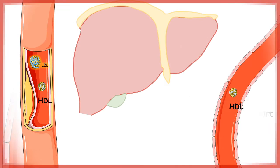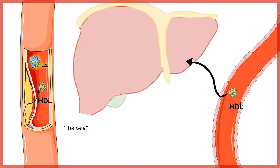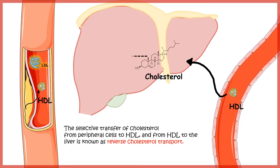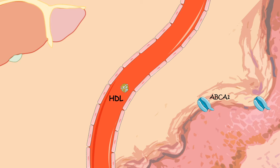LDL deposits excess cholesterol in the artery walls, while HDL circulates, collects that excess cholesterol, and returns it to the liver. This selective process is known as reverse cholesterol transport, where peripheral cholesterol is returned to the liver for recycling. The cholesterol is then converted to cholic acid, which is ultimately utilized to form bile acids.